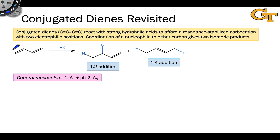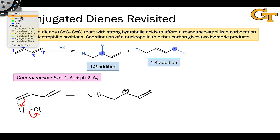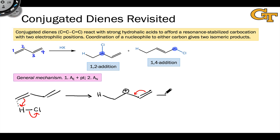Conjugated dienes are analogous to alpha-beta-unsaturated carbonyl compounds, and they too can react in addition reactions in two ways. In a 1,2 addition process, H and the nucleophile add to the 1 and 2 carbons, and here it's carbon 2 that serves as the electrophile. In a 1,4 addition process, it's carbon 4 that serves as the electrophile. The reason we obtain these two products becomes very clear if we look at the mechanistic details of this reaction. In the first elementary step, carbon 1 is protonated with the hydrohalic acid to form a carbocation intermediate, and initially it looks like carbon 2 is the electrophilic position. However, we can draw resonance structures that illustrate that carbon 4 is also electrophilic — an alternative resonance form has positive formal charge at carbon 4.